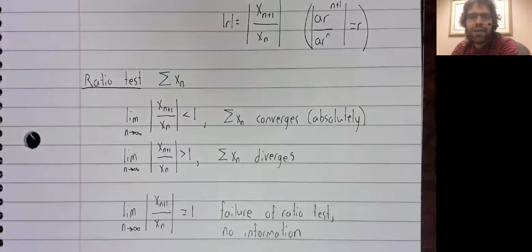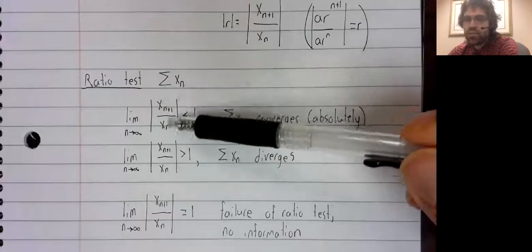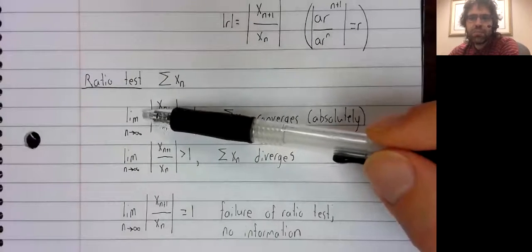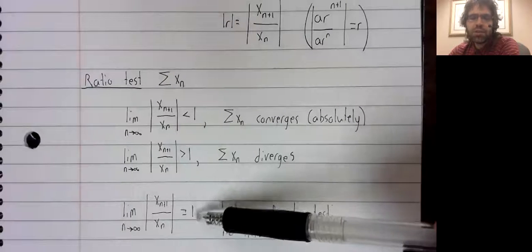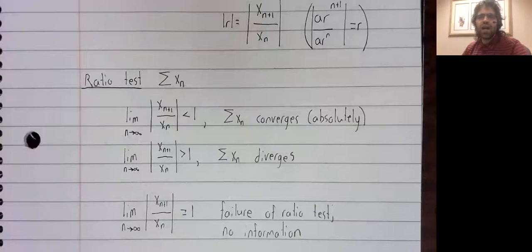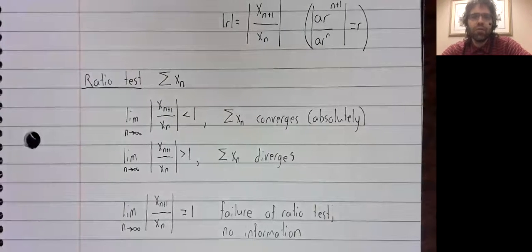we can plug and play. We don't need to know going into this what we think the series is doing. We just find this ratio and take a limit, but it can fail. So it's not a one size fits all solution to these convergence and divergence problems.